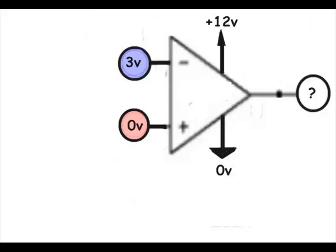For our first example, let's place 3 volts on the inverting input and 0 volts on the non-inverting input. What do you think the output voltage would be? If you said 0 volts, you are correct.